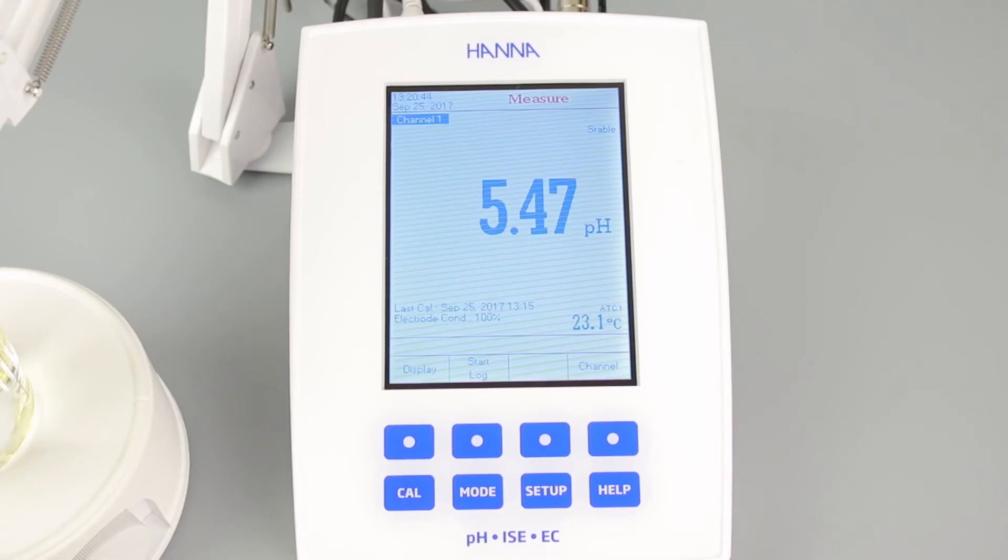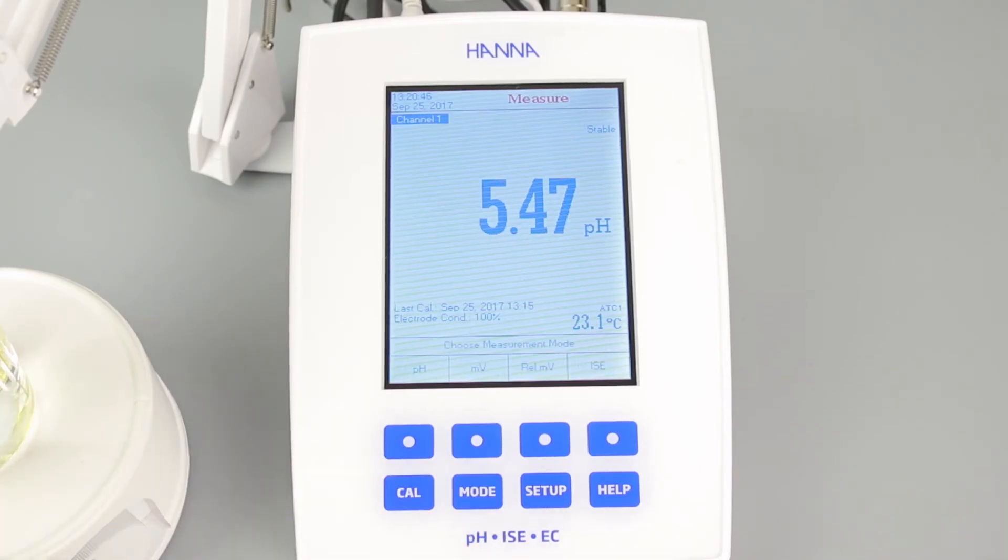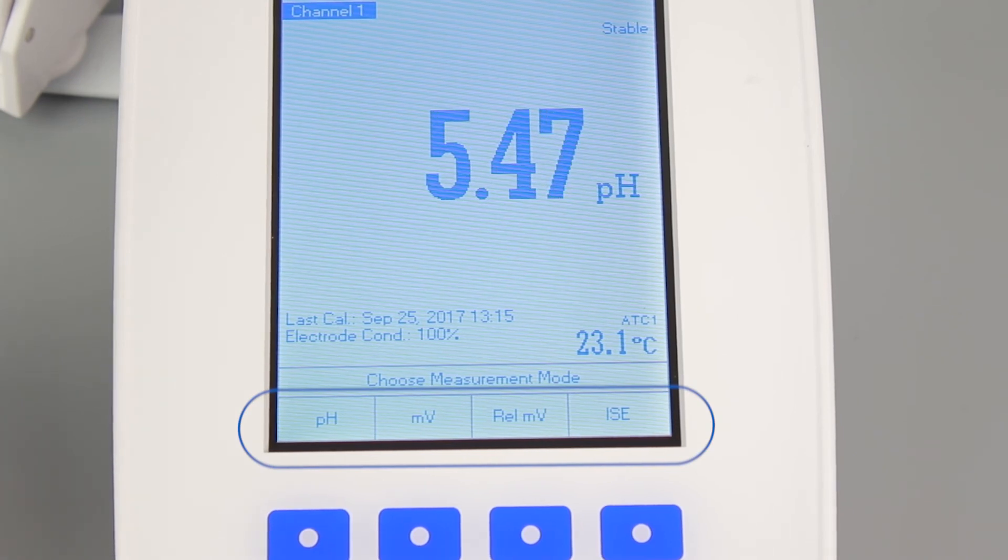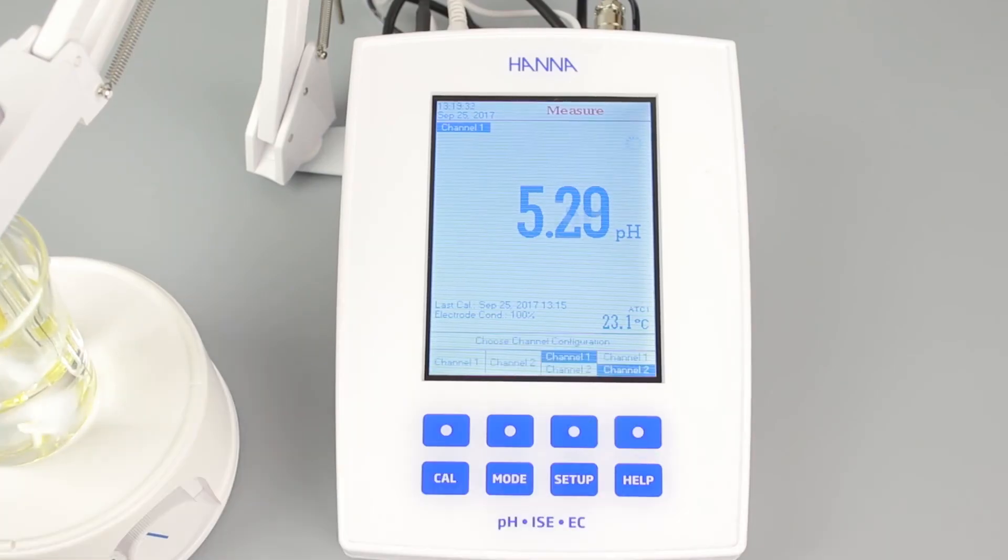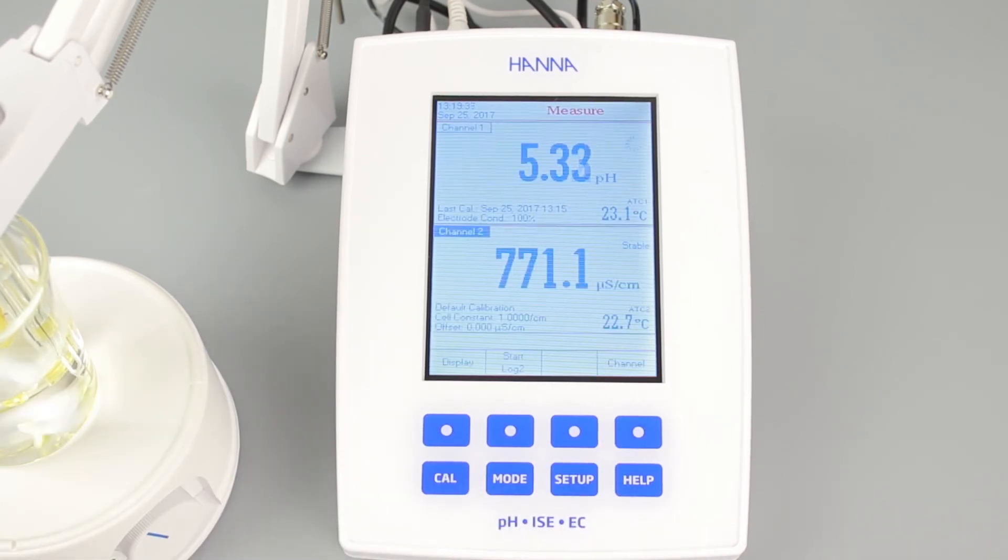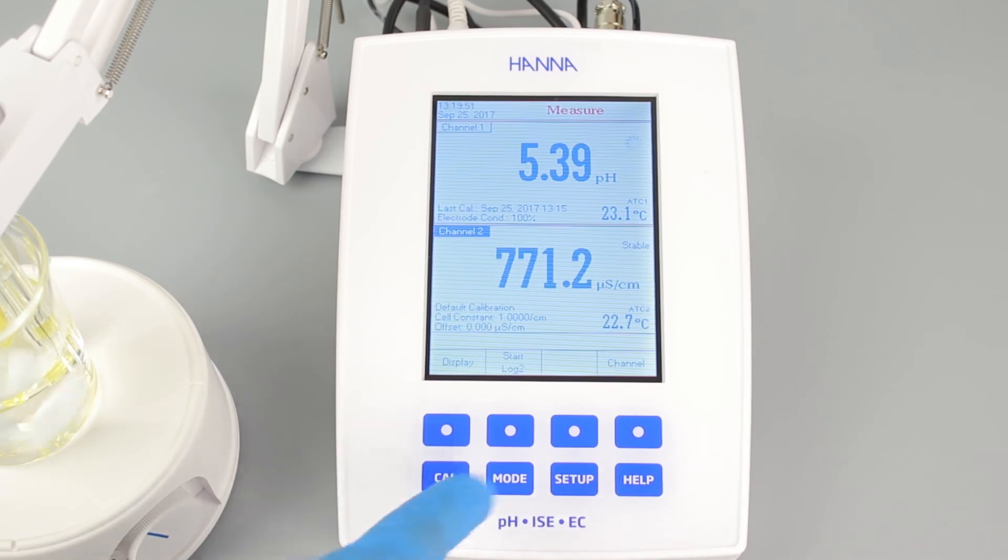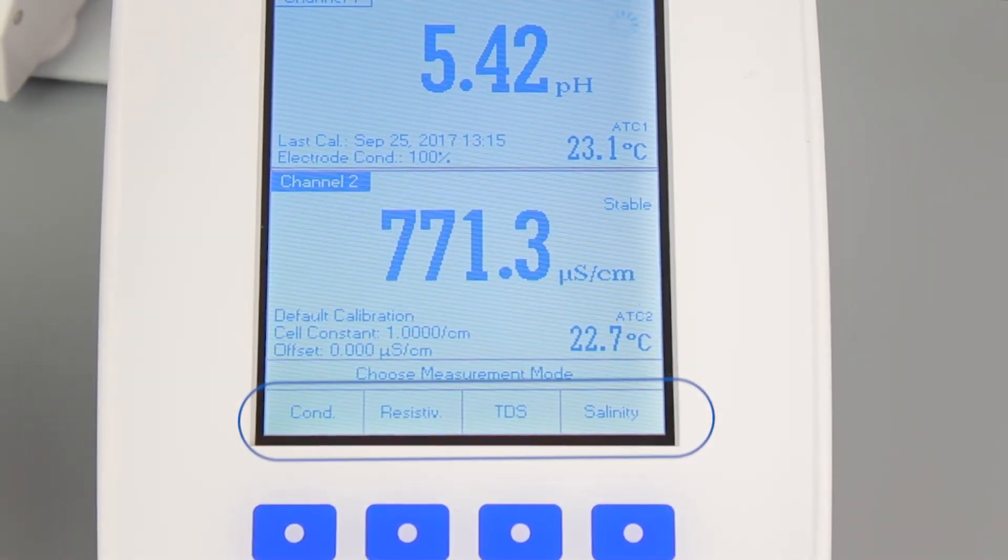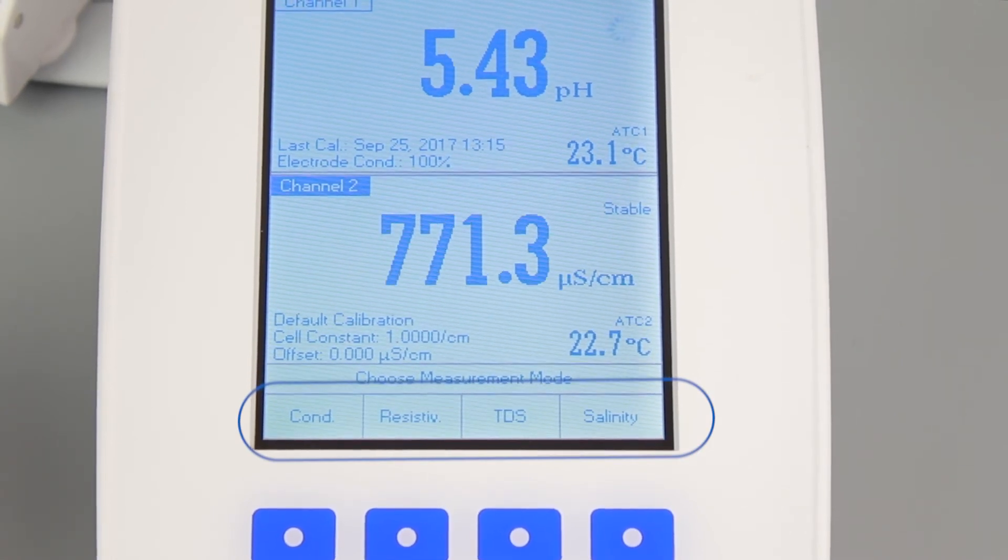After calibration, you can begin taking measurements. Place the electrodes into your sample and wait for a stable reading. Once stable, you can press MODE to switch between pH, millivolt, relative millivolt, and ISE. Pressing channel and then one of the dual level display buttons will let you see both readings at once. When viewing EC in two-channel mode, press MODE again to switch between conductivity, resistivity, TDS, and salinity.